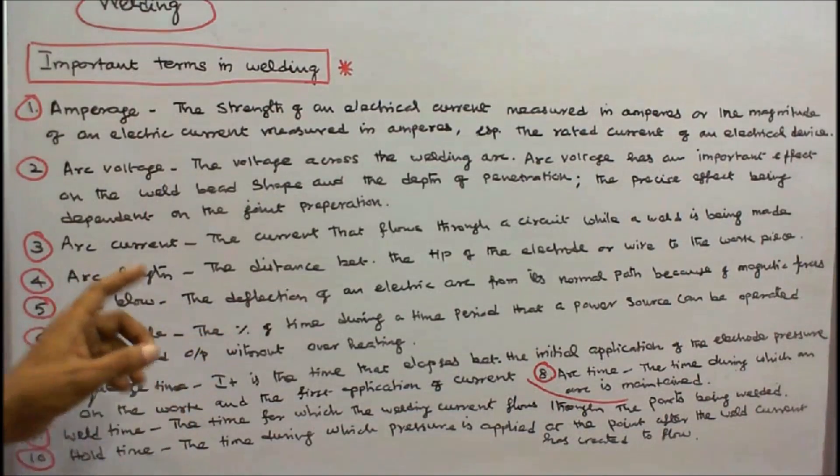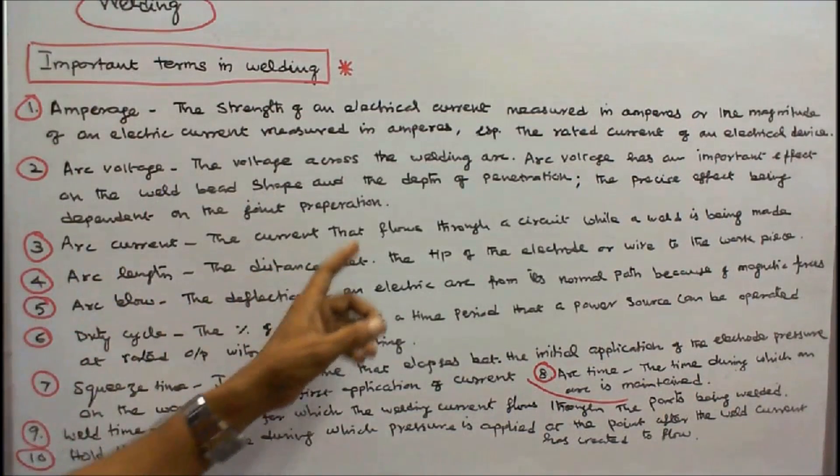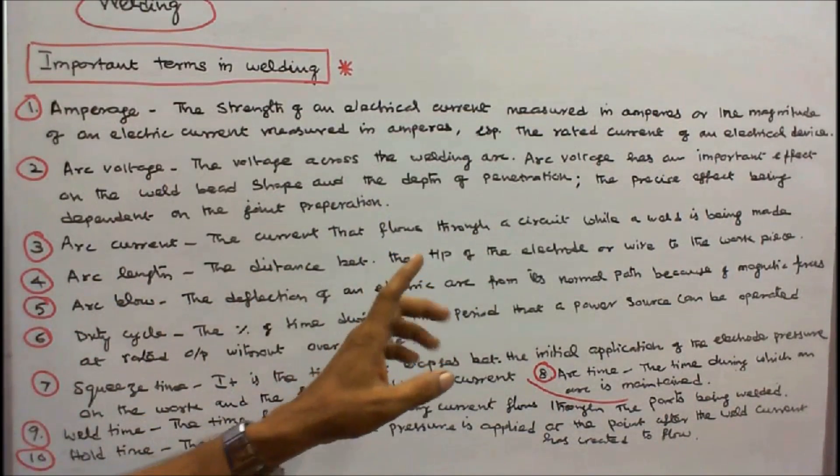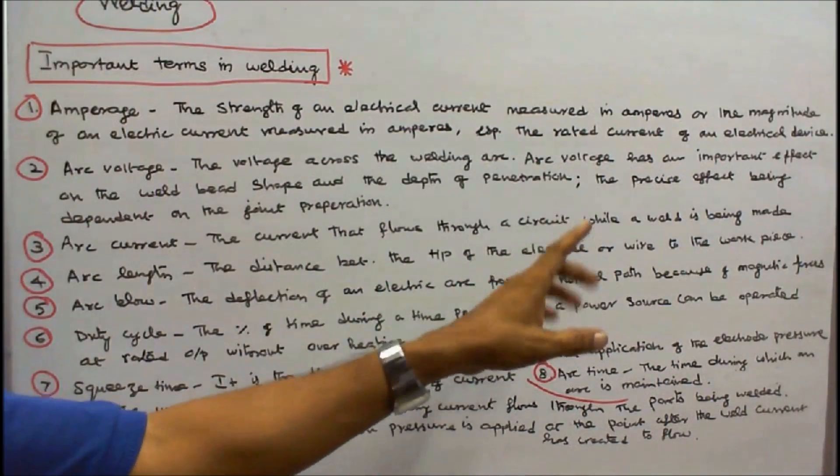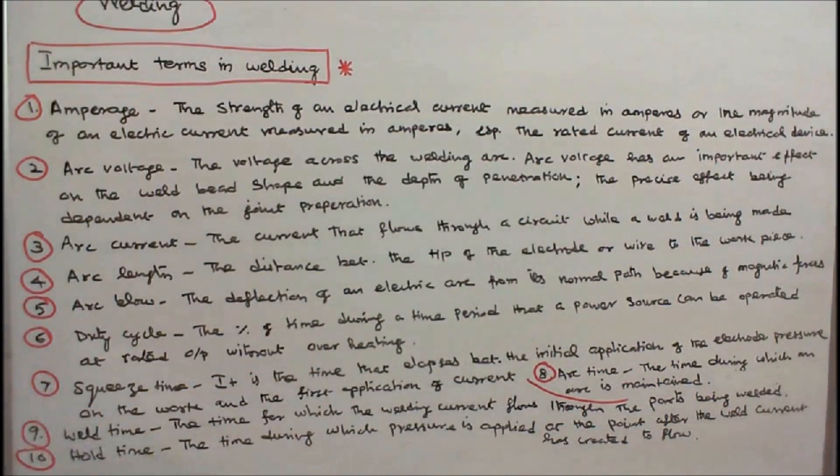Arc length: the distance between the tip of the electrode or wire to the workpiece.